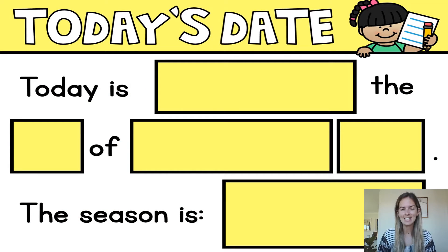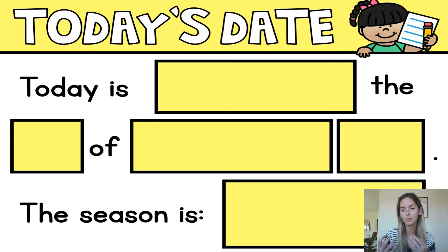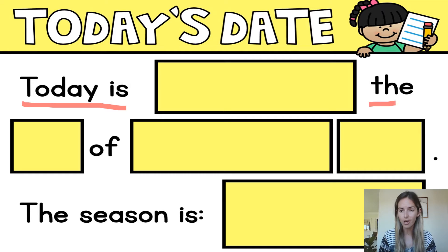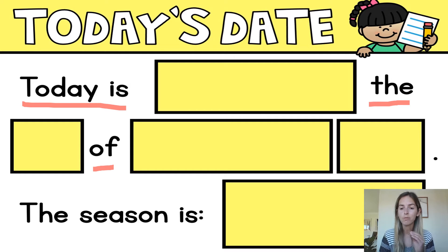Okay, so today's date. What you need to do here is fill in the gaps. You can see that there are some big rectangles and that's where you need to write. I'd like you to write everything that is on this slide. I'm going to read it to you. Today is — and you need to tell me what the day is. The, what date is it? Of, which month, and then in this one, of which year.